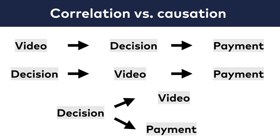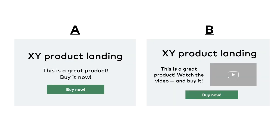So how do we decide whether to feature the video on the homepage? By running an experiment. The company should have A/B tested version A against version B, and that would have been the only certain way to tell whether the video has a real effect on conversion rates.